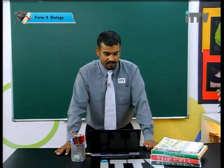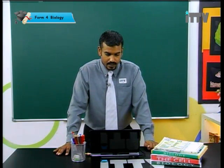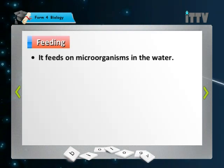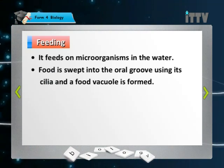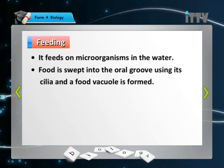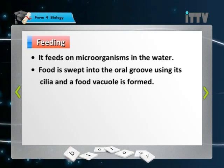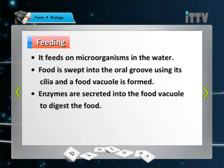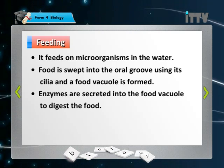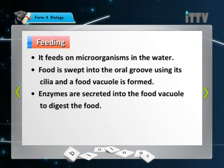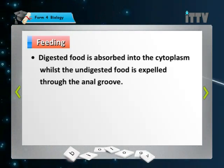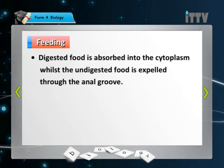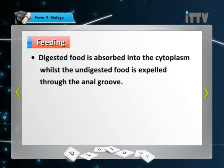Now let's take a look at the feeding habits of Paramecium. It feeds on microorganisms found in the water. Food is swept into the oral groove using its cilia and a food vacuole is formed. Enzymes — lysozymes — are secreted into the food vacuole to digest the food. Digested food is then absorbed into the cytoplasm, whilst undigested food is expelled through the anal pore.